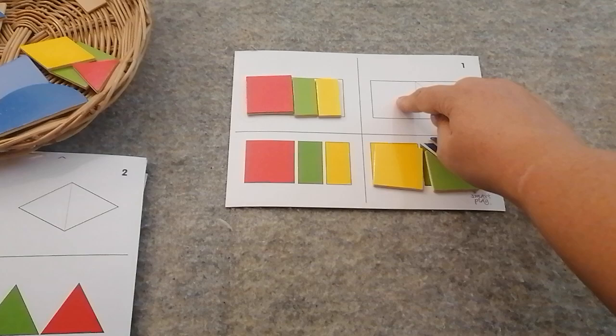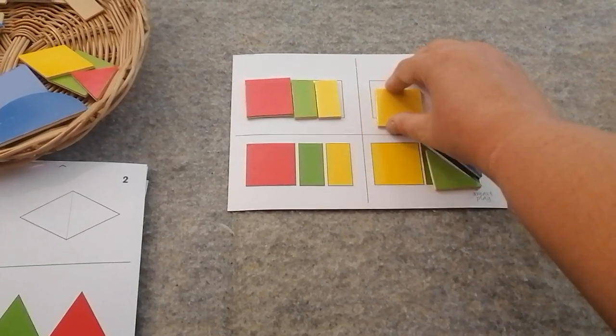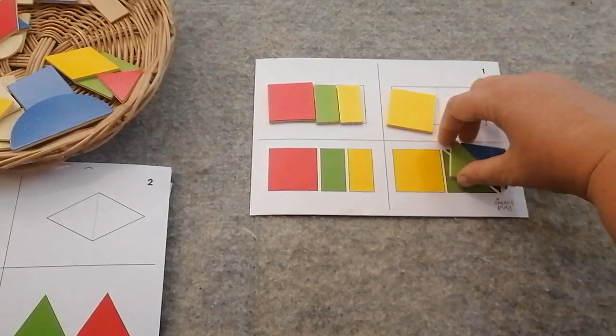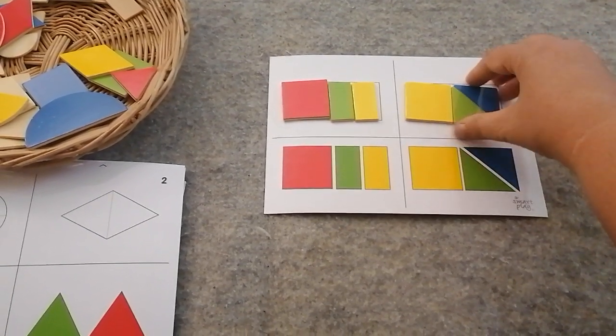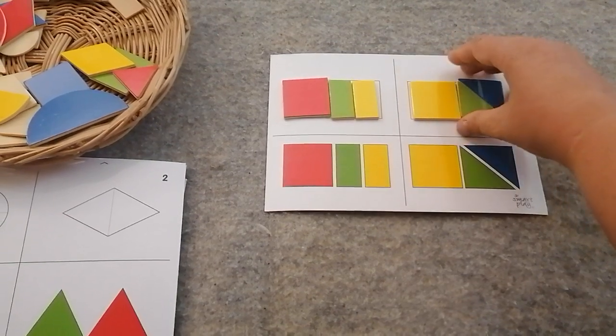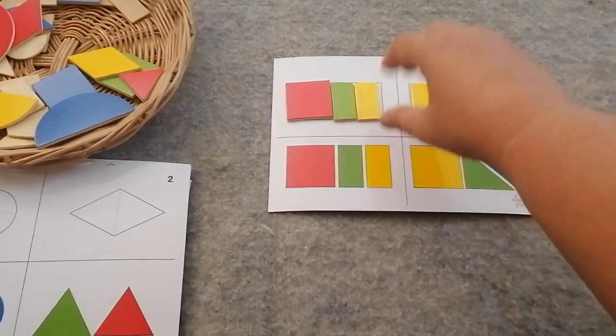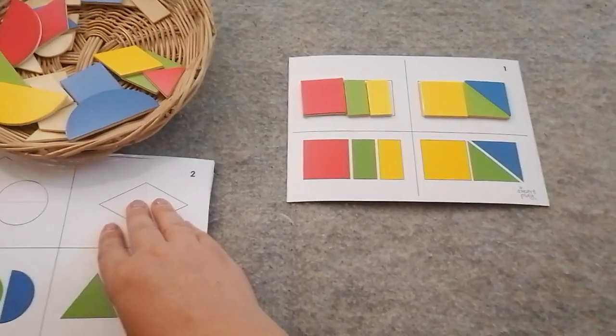And now we're gonna move them to this block. So the yellow square goes here, the green triangle goes there, and the blue triangle goes there. We get them really nice and straight. And these get more difficult as we go on.